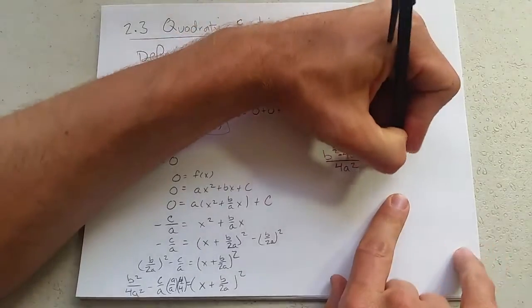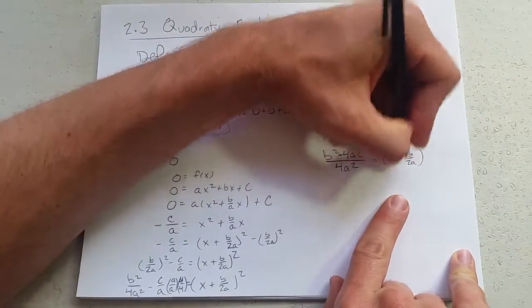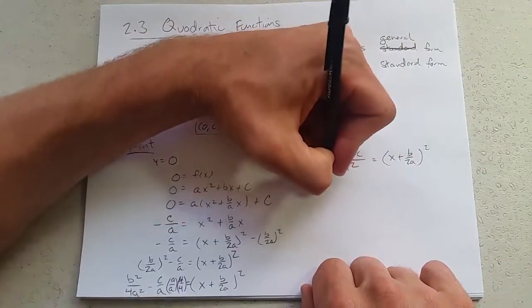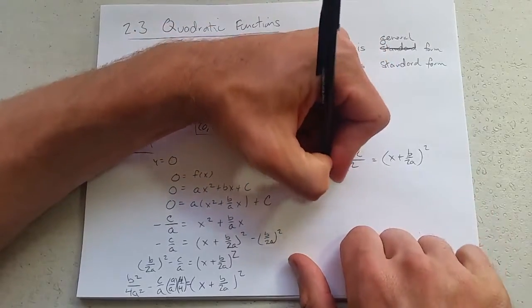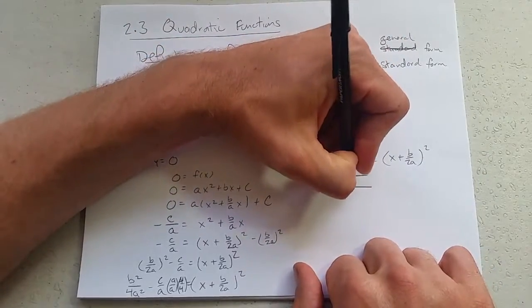Equals (x plus b over 2a) squared. Now ready to take a square root of both sides. Whenever you take square root of something squared, you get a plus or minus. Now b squared minus 4ac.